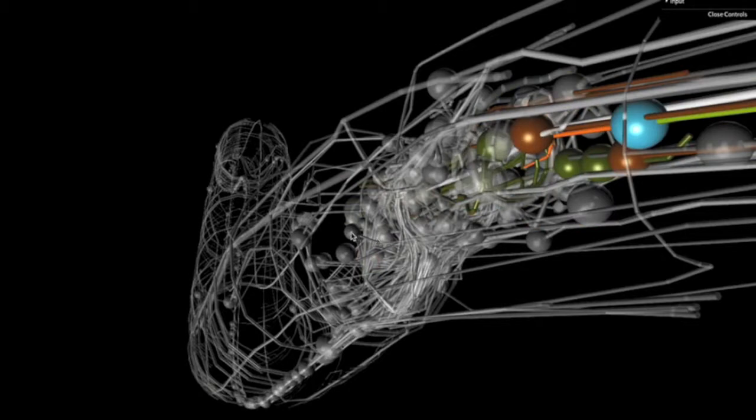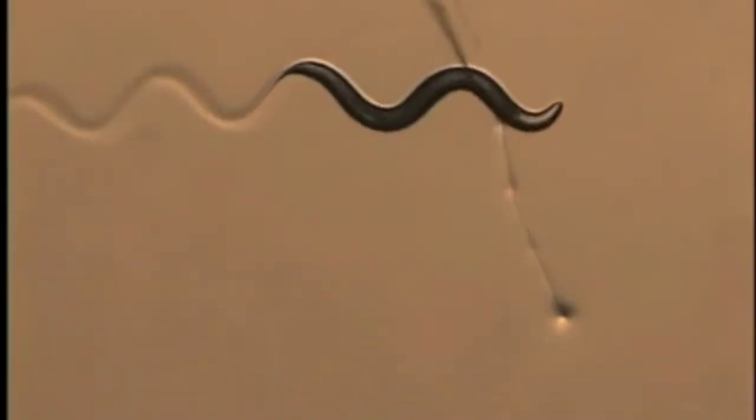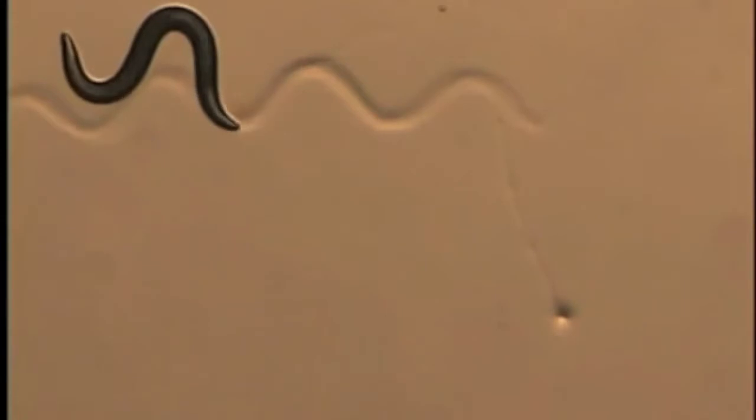Despite the relatively simple neuronal system present within C. elegans, it displays numerous complex and primitive behaviors. Primitive behaviors include feeding, locomotion, and reproduction.